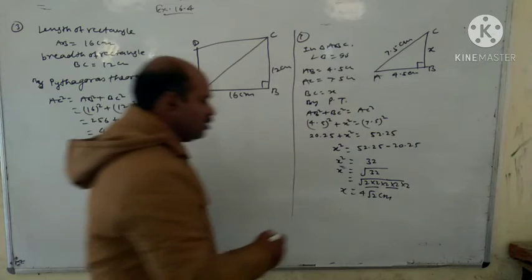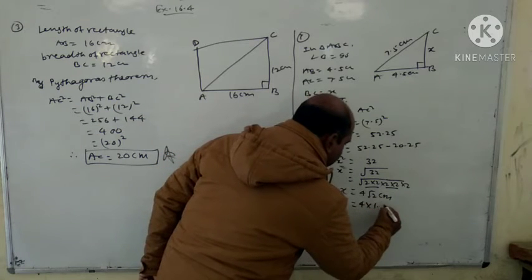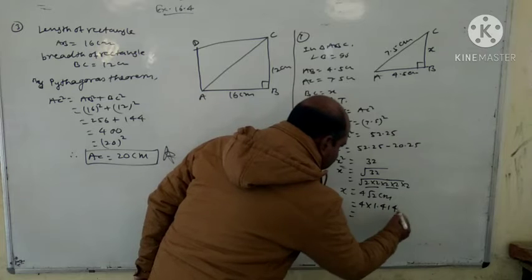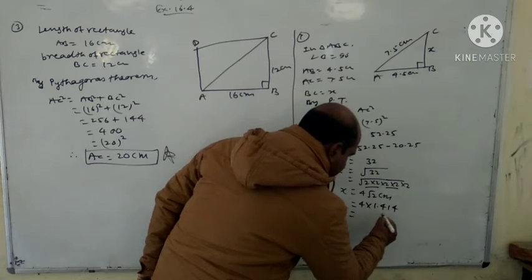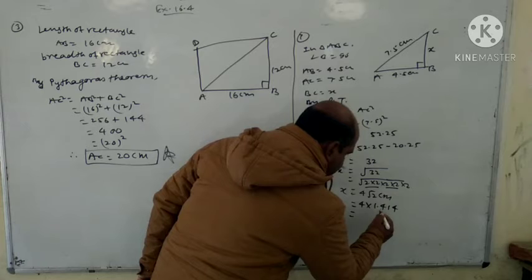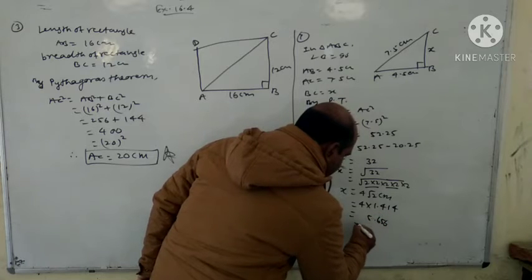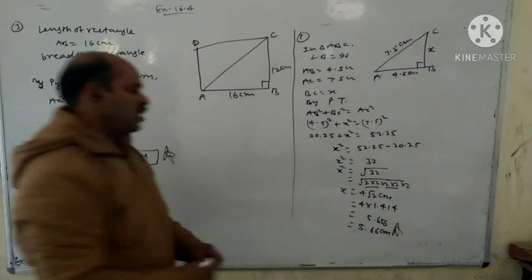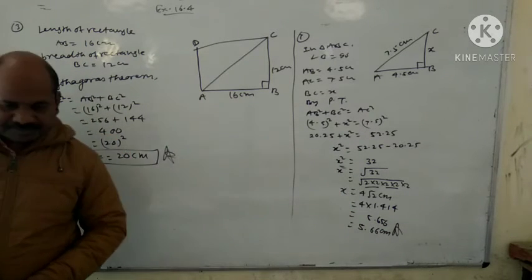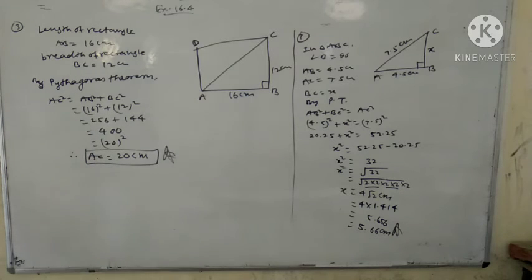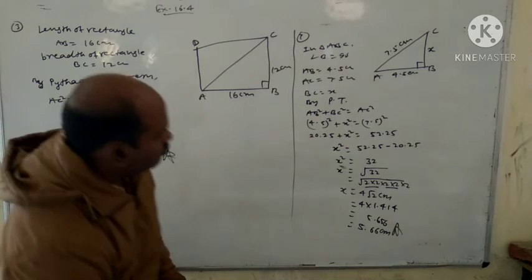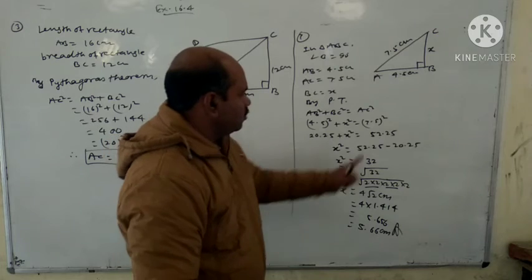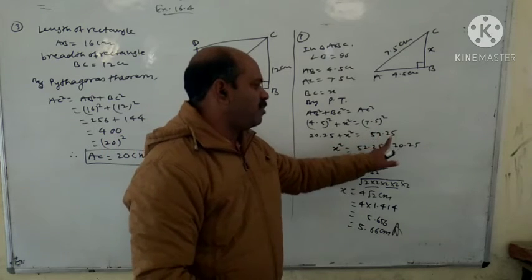The value of root 36 is 6. So the other side is 6 centimeter. Actually, using root 2 value of 1.414 gives approximately 5.66 centimeter. This is the third side. There was a correction: 7.5 squared gives 56.25.